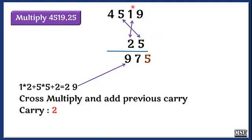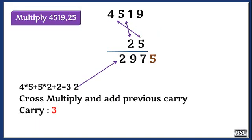The next step, we are going to leave this 1 also. Then we are going to consider this 4 and 5 and then this 2 and 5. 4 into 5 and 5 into 2, then adding the previous carry. Result is 32.